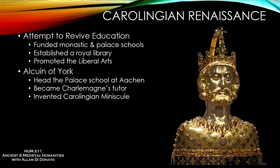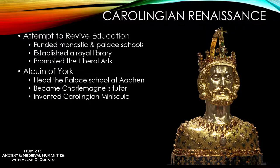Alcuin headed up the palace school at Aachen, becoming Charlemagne's personal tutor in things like rhetoric, logic, and astronomy. He was also instrumental in developing Carolingian minuscule — the invention of a lowercase alphabet. Before this, the alphabet was primarily in capital letters. The benefits included writing smaller, fitting more on a page — important since they worked with expensive parchment rather than papyrus. More importantly, Carolingian minuscule brought standardization of letter forms, introduction of the question mark, and various punctuation marks, furthering literacy. We still use the lowercase alphabet today.